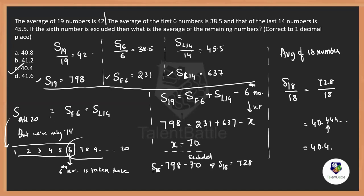The key logic: we only have 19 numbers, but first 6 plus last 14 gives 20 — because the sixth number is added twice. Subtract one instance of the sixth number to reconcile. Sum of 19 = 798, sum of first 6 = 231, sum of last 14 = 637; so the sixth number = 70. Excluding it: sum of 18 = 728, average = 40.4 = option C. Getting this logic is very important — without it you cannot solve the question.